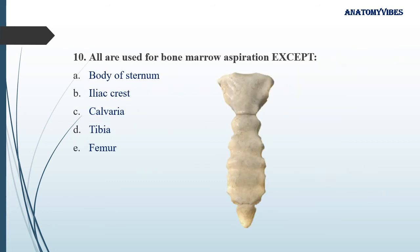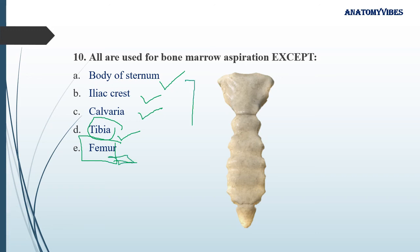All are used for bone marrow aspiration except. Bone marrow aspiration is performed in cases of leukemia and chronic anemia to diagnose pathology, using a wide-bore needle. It can be done from the body of the sternum, the iliac crest of the hip bone, the calvaria, and the anterior border or shin of the tibia. However, the femur — a long bone — is not used for bone marrow aspiration. So the answer is femur.